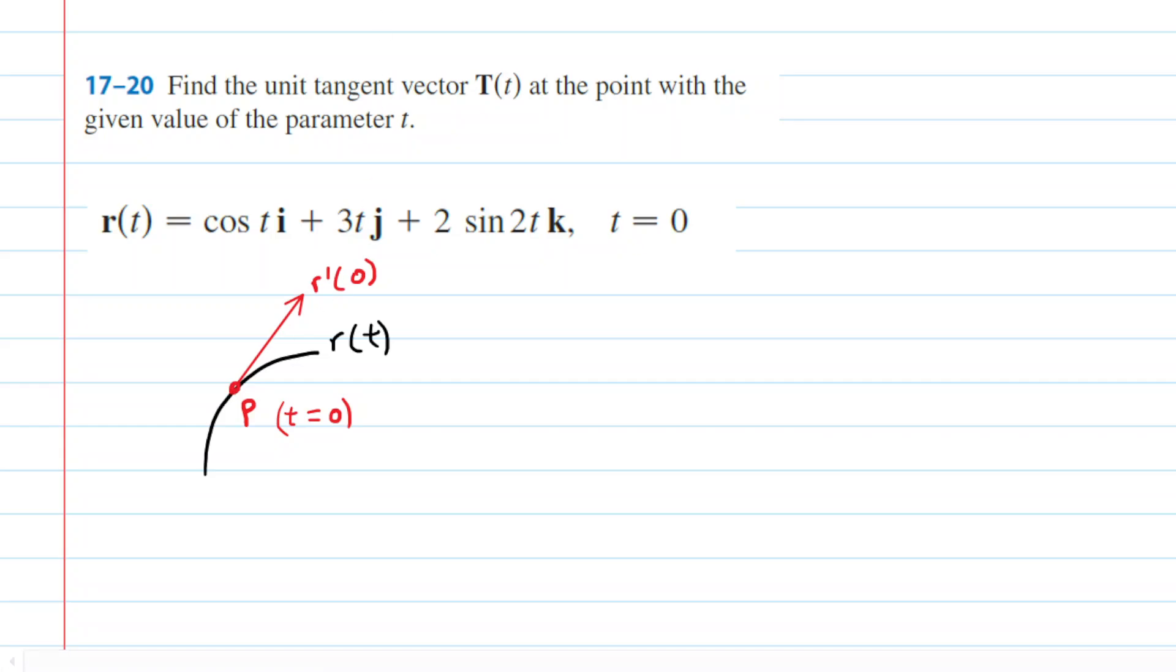Now, we do not want a tangent vector. We would like a unit tangent vector, which is symbolized by T(t). Recall that a unit tangent vector is a vector that is pointing in the same direction as that red tangent vector, but it simply has a length equal to 1, or a magnitude equal to 1. So, that is our objective, is to find that vector right there.